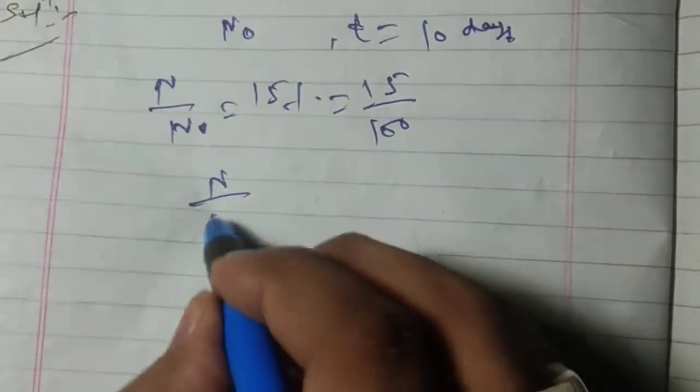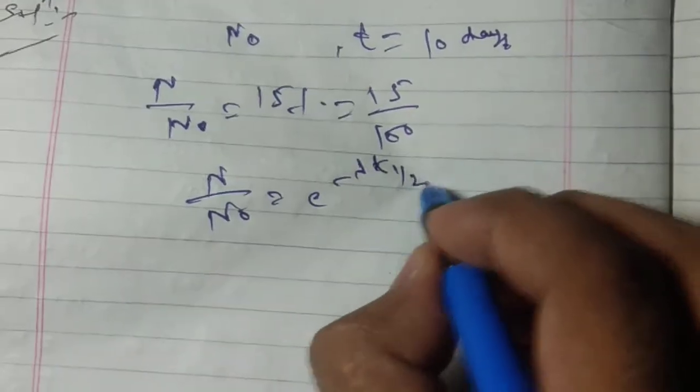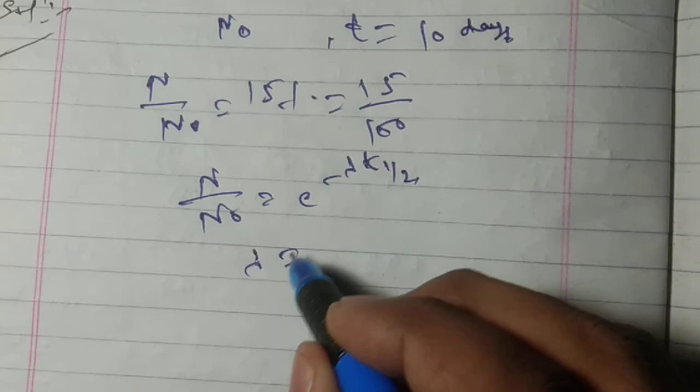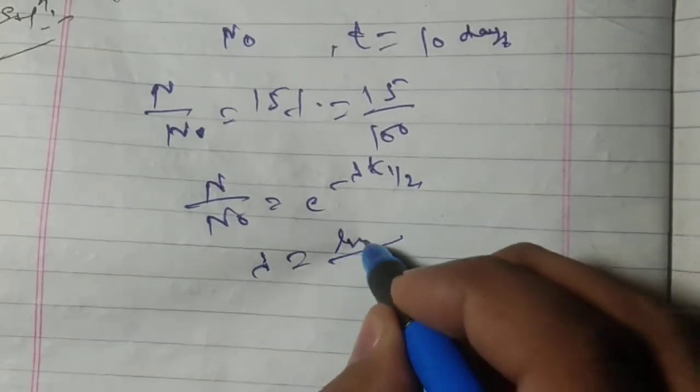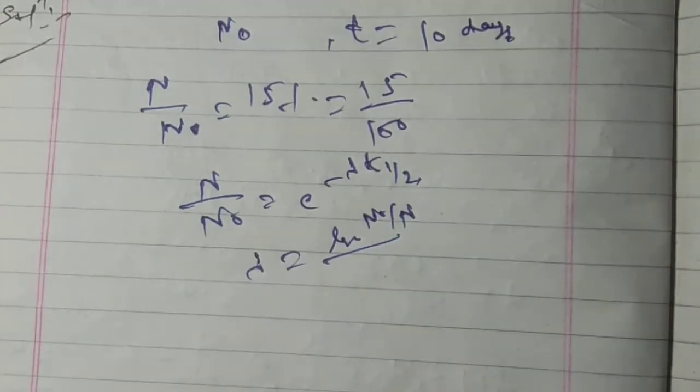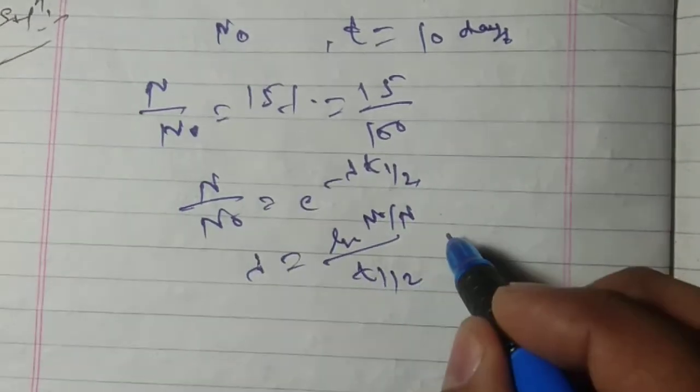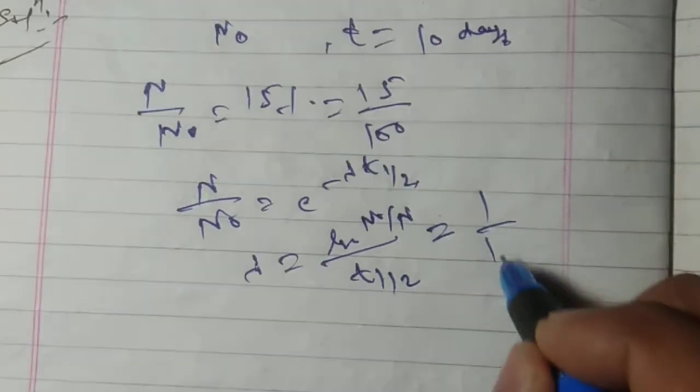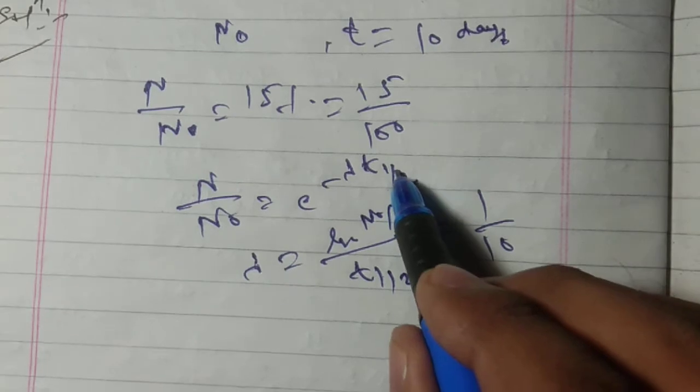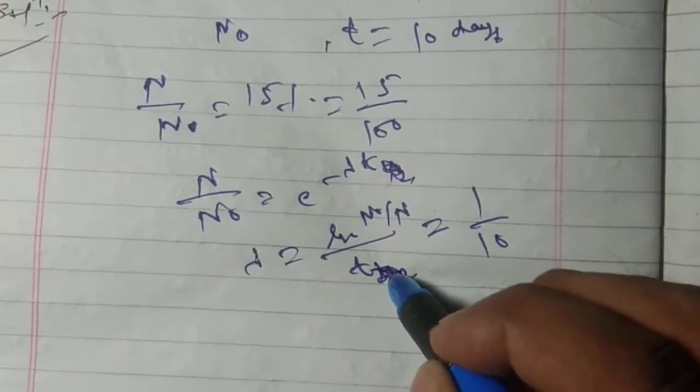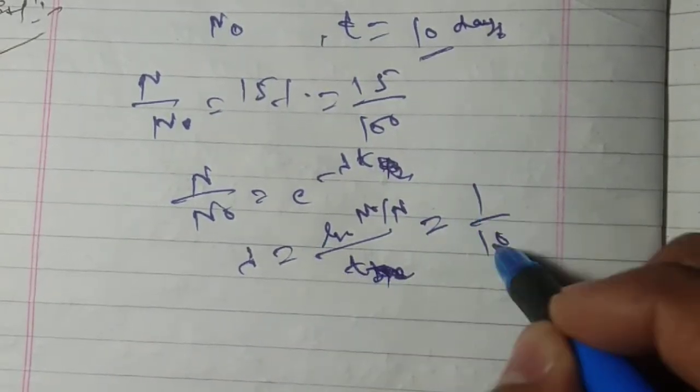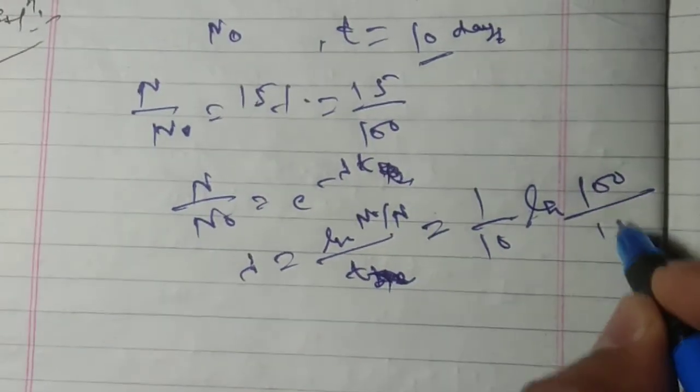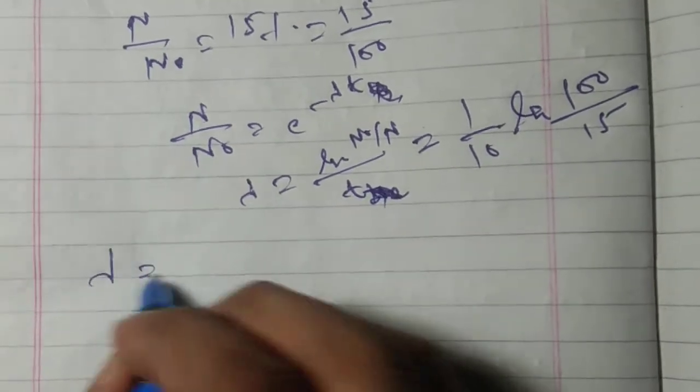From the decay equation formula N upon N naught equal to e to the power minus lambda t. Taking log both sides we get lambda t. This is simple t, not t half, so this is simply t and this t is equal to 10 days. So 1 by t is 1 by 10 ln N naught upon N, and N naught upon N is 100 upon 15. So this will give lambda equal to 1 upon 10.